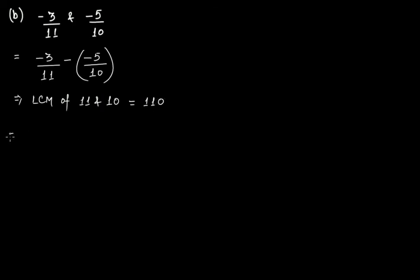So the next step is, this is 110. 11 times 10 is 110, so this becomes minus 3 times 10. Then minus, within the bracket this is 110. 10 times 11 is 110, so minus 5 times 11.